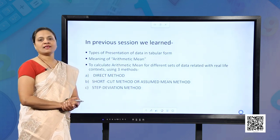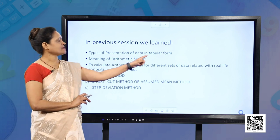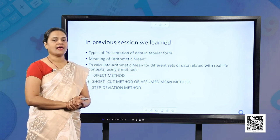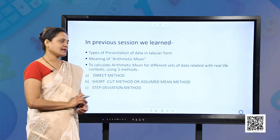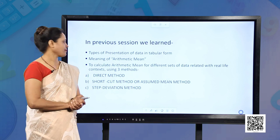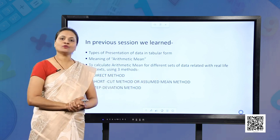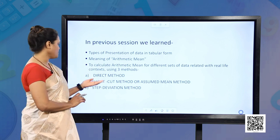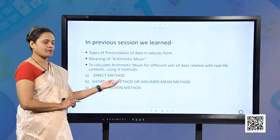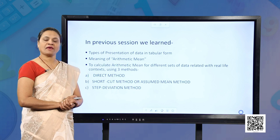In our previous session, we discussed the types of presentation of data in different tabular forms and we also discussed what is the meaning of arithmetic mean. We calculated arithmetic mean using three different methods: the first was direct method, then shortcut or assumed mean method, and the third method was step deviation method.